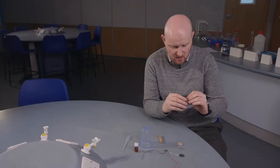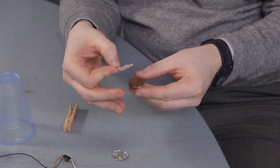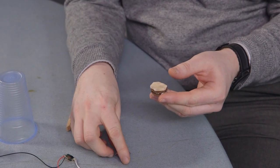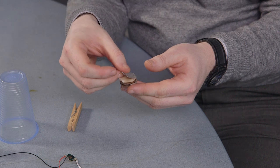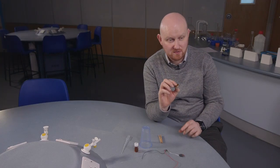And then we're going to put another copper coin on top of that, the other vinegar soaked pad and then our other piece of aluminium foil. So that is basically our voltaic cell.